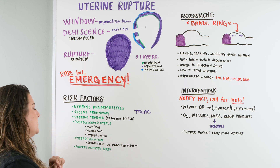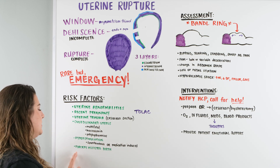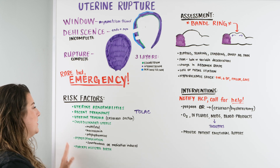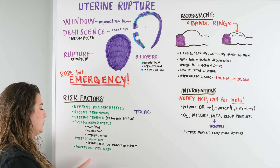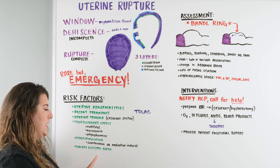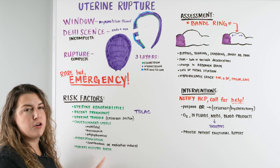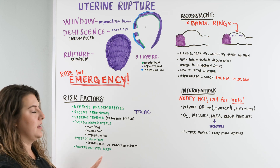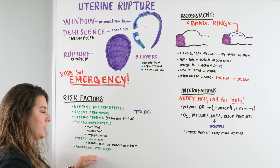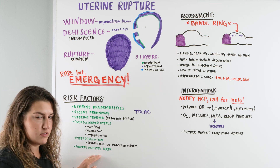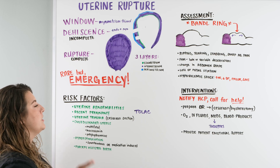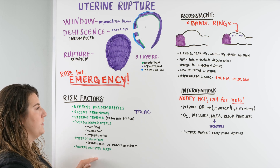The last risk factor is a forceps-assisted birth. There can be a rupture secondary to this — it is a concern and a cause, and a risk factor. But it is not necessarily the case that every time you have a forceps-assisted birth you will have a uterine rupture. It is just a risk factor.